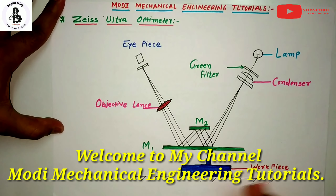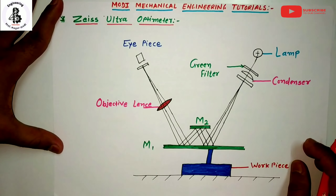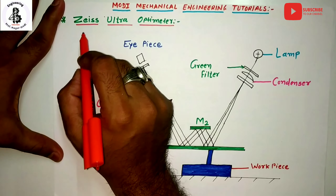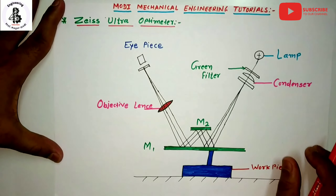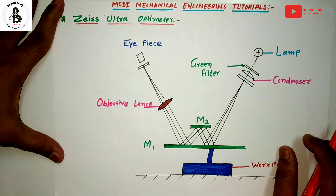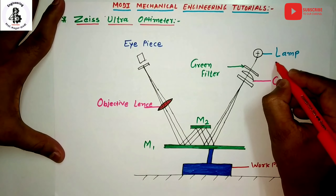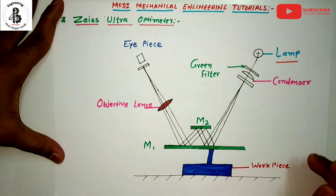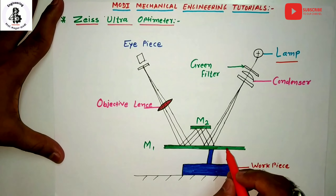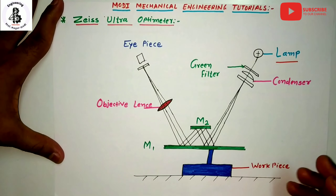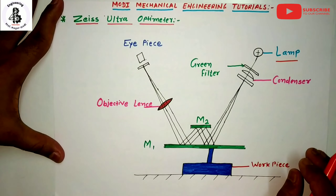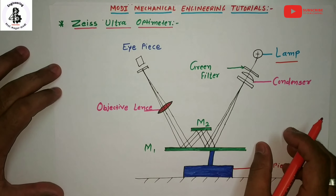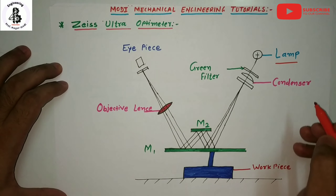Welcome to my YouTube channel Modi Mechanical Engineering Tutorials. Today I would like to explain about one of the comparators — the optical comparator — and its name is the Zeiss Ultra Optimeter. You can see the basic construction of the Zeiss Ultra Optimeter. The double reflection method or mechanism is adopted for measurements of workpiece materials, giving higher magnification compared to any other comparators.